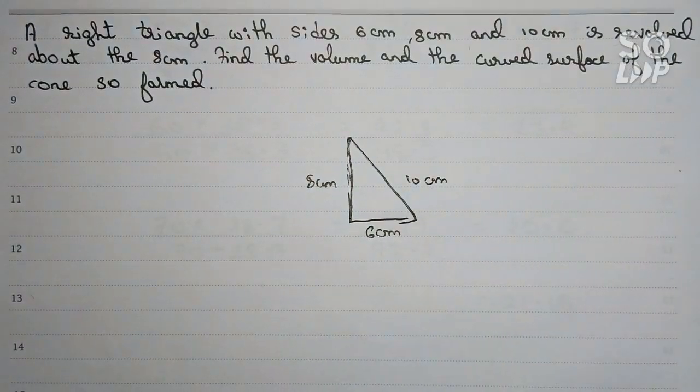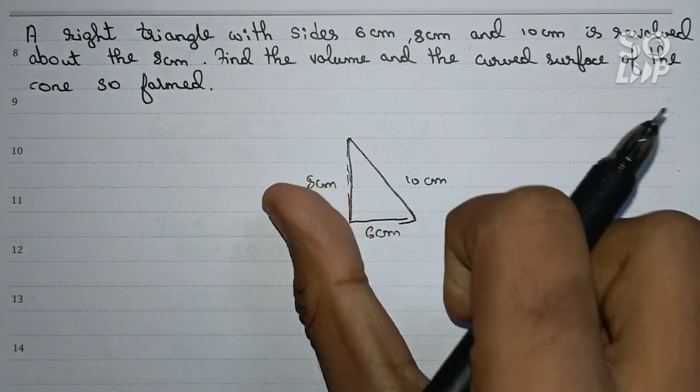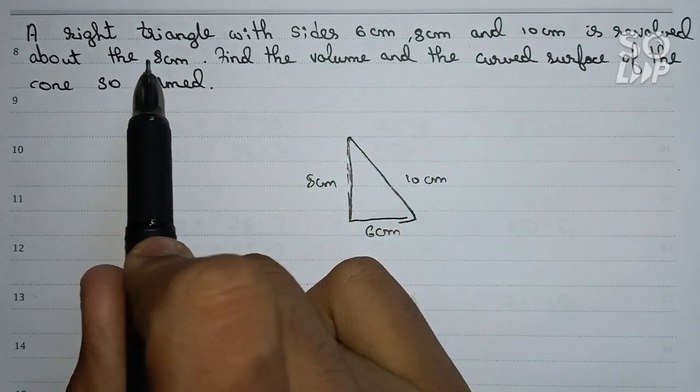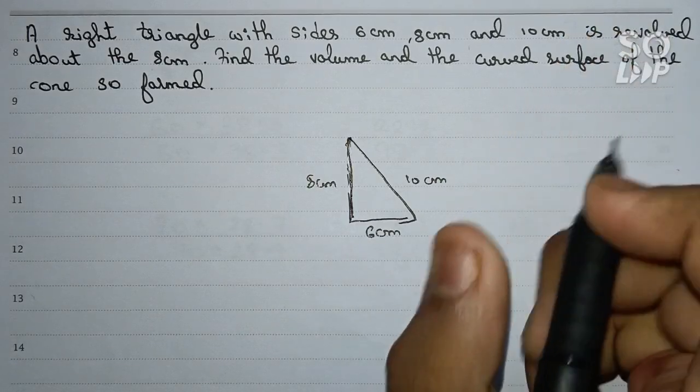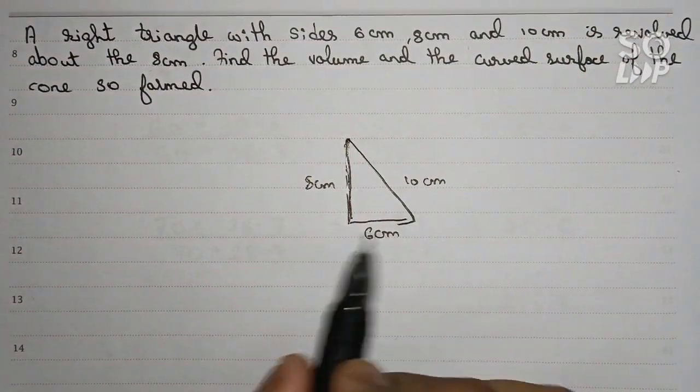Now with this triangle, it is given that it is revolved around the 8 centimeter mark, so that means with this side we have to revolve. So it is very simple.